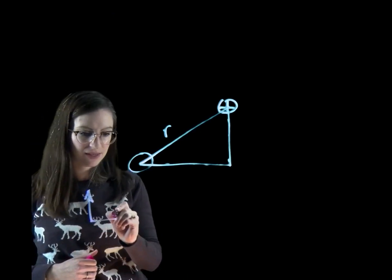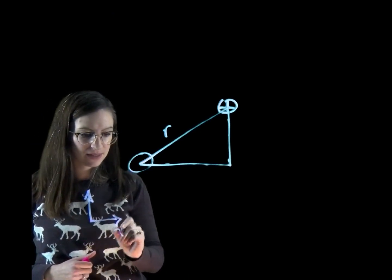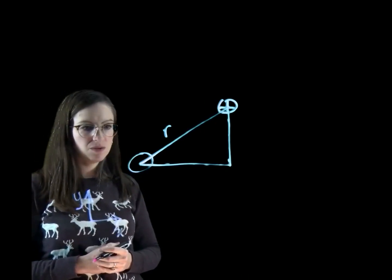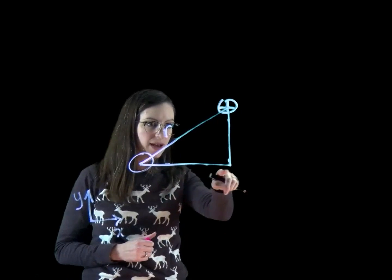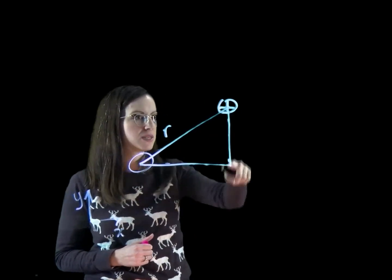This is my y-axis. This is my x-axis here. So I need to know how is R projected onto the x-axis, and how is R projected onto the y-axis.